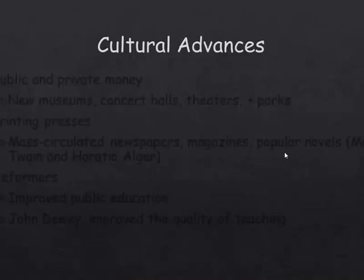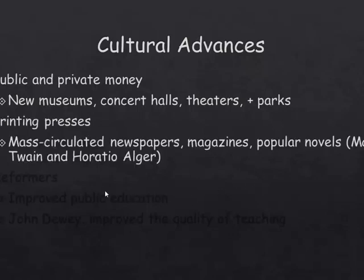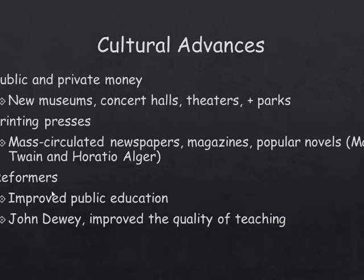There are different cultural changes that happened because of all these people. There was public and private money — the government built certain things for people, and there were private donations from philanthropists like the Carnegies and Rockefellers. You got new museums, concert halls, theaters, and public parks. The Olmstead park system develops during the late 1800s. The printing presses were really humming, more and more people could read, so you had mass-circulated newspapers, magazines, and novels — everybody reading the same things, creating a mass culture.